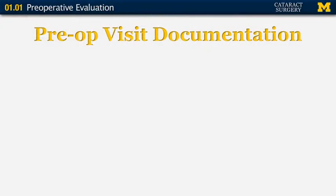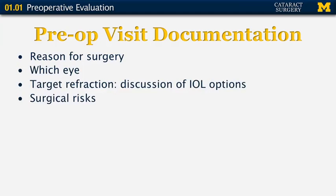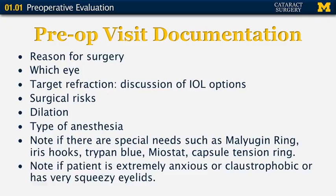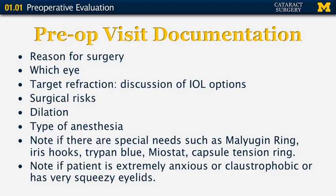Then we have to document everything in the patient's clinic note. We have to document the reason for the surgery, which eye, the target refraction and discussion of lens options, risks of surgery, how well the pupil dilates, and the type of anesthesia. We have to note any special needs for that patient, such as a Malyugin ring, iris hooks, trypan blue, Miochol, or capsular tension ring. We would also like to note if the patient is extremely anxious or claustrophobic, if draping would be difficult, or if they have very squeezy eyelids. All of this information is important to have handy when going into the operating room.